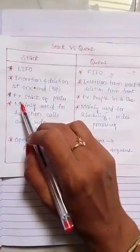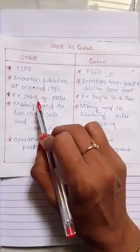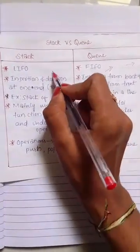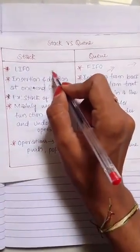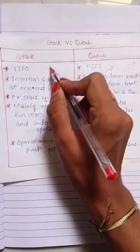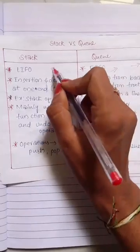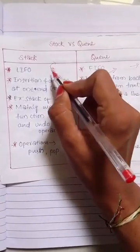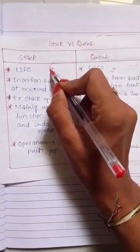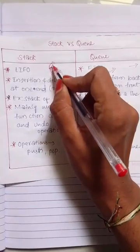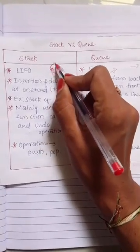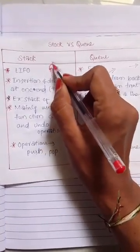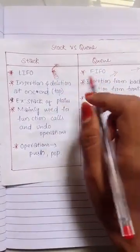An example for stack is a stack of plates. For example, if I have 10 plates, I will take the first one that is on top — whatever I kept last, I will take that first. That is last in first out.